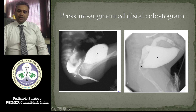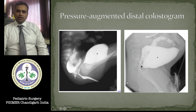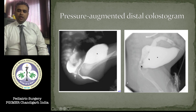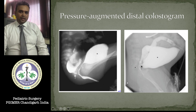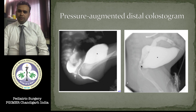Here we can make out there is space for dissection between the rectal pouch and the urethra, giving us a clear picture. The second X-ray shows the prostatic or recto-bladder neck fistula, where the plane of dissection is very narrow and the rectal pouch is quite high, requiring dissection high up when approaching from below.